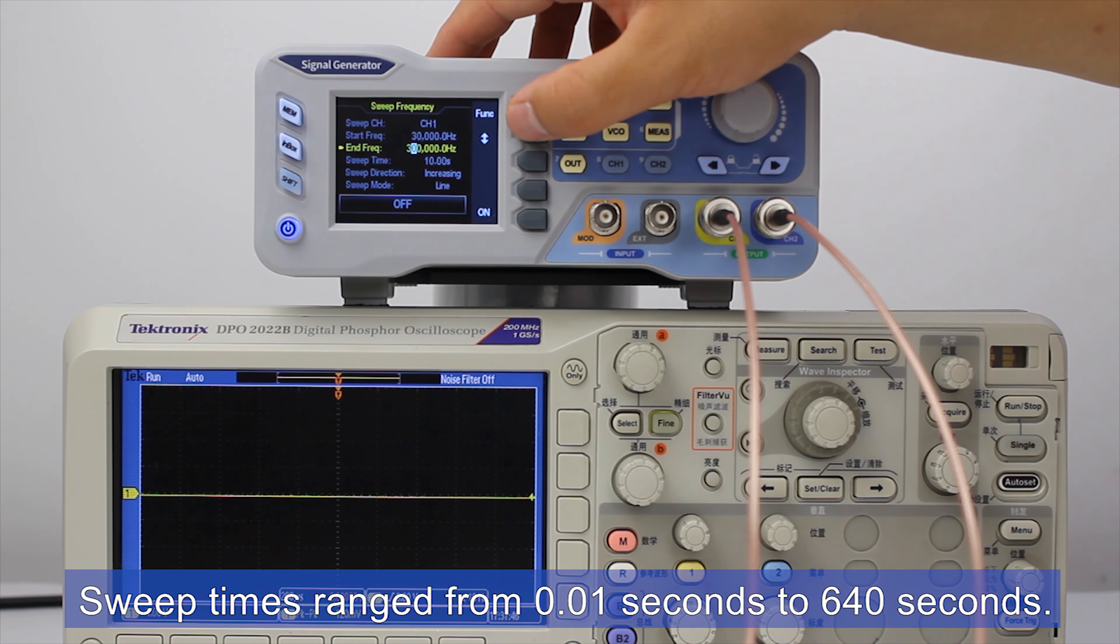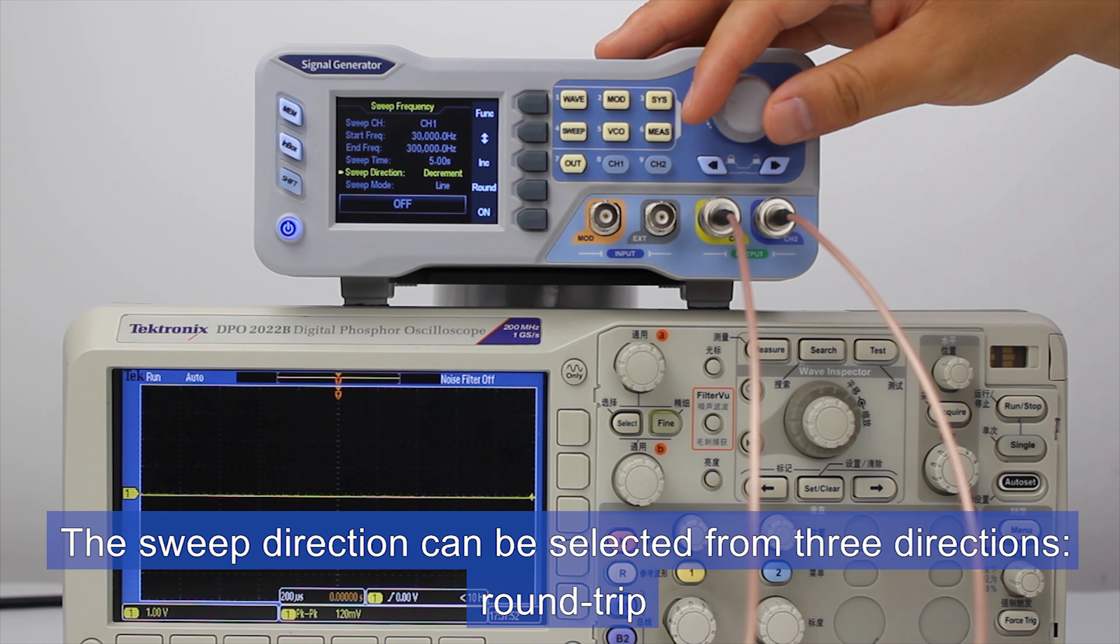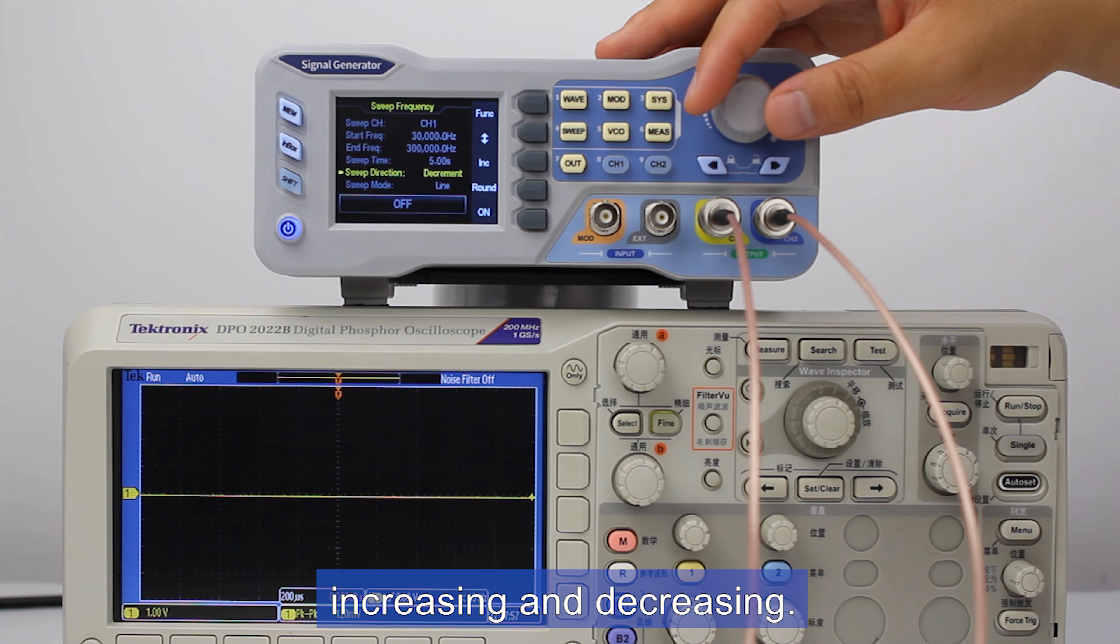Sweep times range from 0.01 seconds to 640 seconds. The sweep direction can be selected from 3 directions: round trip, increasing, and decreasing.